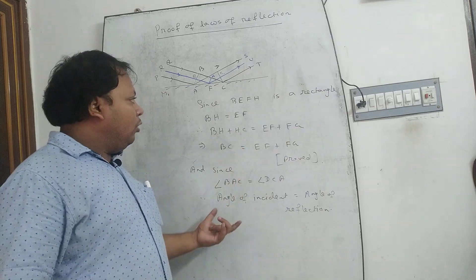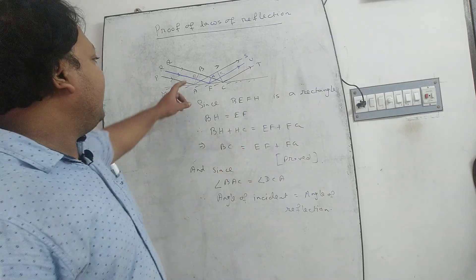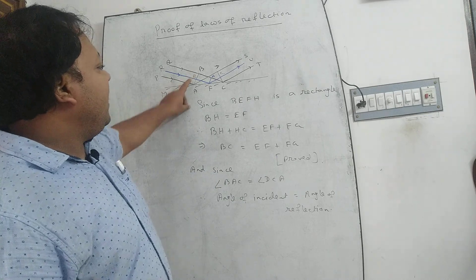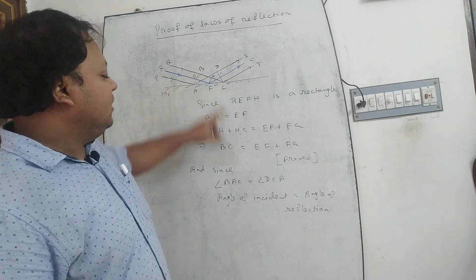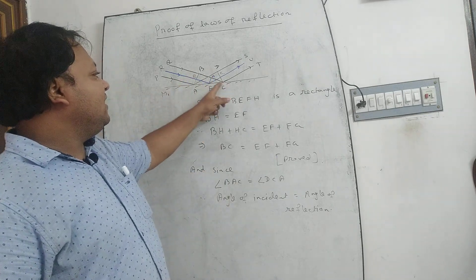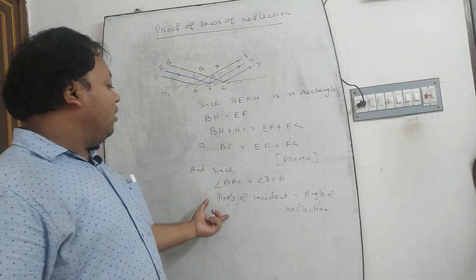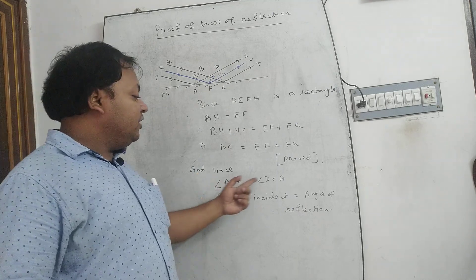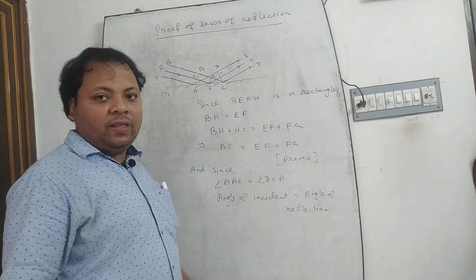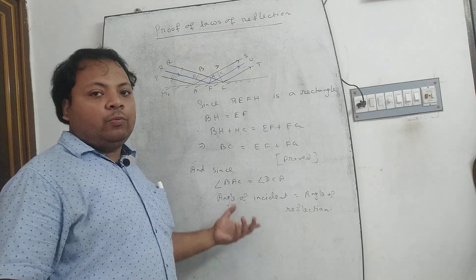We already proved that angle BAC = angle DCA. That is why the angle of incidence is equal to the angle of reflection. This proves the second law of reflection.